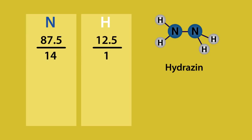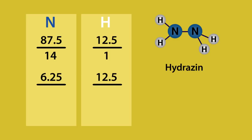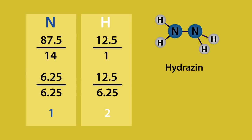Doing this calculation gives us 6.25 for nitrogen and 12.5 for hydrogen. We then divide these numbers by the smallest of the two, which is 6.25, and this gives us the ratio of 1 to 2. Since 1 and 2 is the smallest possible ratio, the empirical formula is NH2.